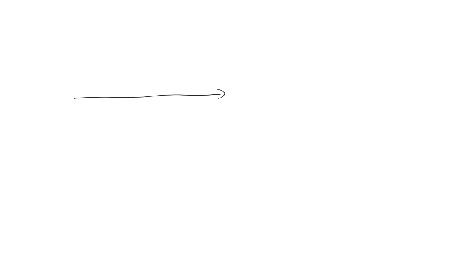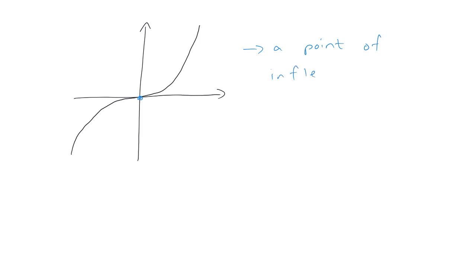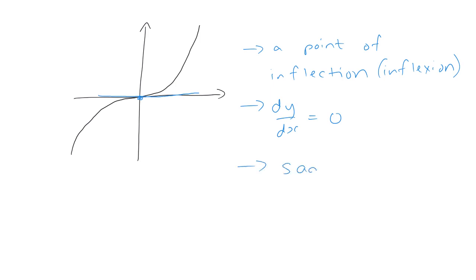We can also get a thing called a point of inflection. A curve that looks something like that — our point here at (0, 0) is called a point of inflection. For years I have been writing it as 'inflexion' with an x, and apparently that's from old English as opposed to 'inflection' with ct. Either way is fine. And still here, if you do your tangent, dy by dx is still 0. This is sometimes called a saddle point.